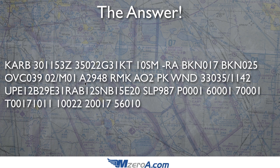Continuing on — the altimeter. A is for your altimeter. Split the difference and put your decimal in there. The altimeter is two-niner point four eight. There's your altimeter setting.